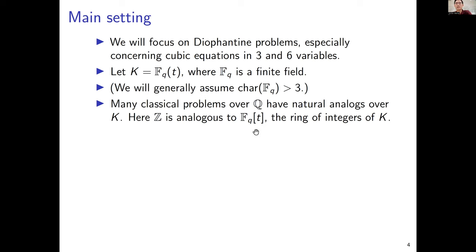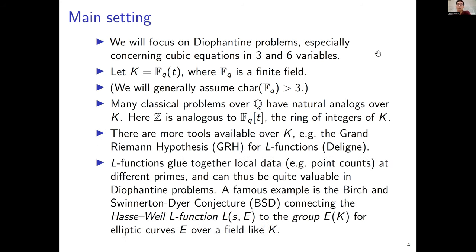Many classical problems over the integers or rational numbers have natural analogs over function fields. The integers here are analogous to the polynomials inside k, namely F_q[t]. This is like the ring of integers of this fraction field k. The advantage of working over a function field is that there are more tools available. For example, the Riemann hypothesis is proven over function fields for arbitrary L-functions, basically due to Deligne's resolution of the Weil conjectures. These L-functions are valuable for Diophantine problems because they glue together a lot of local data on point counts modulo different primes.